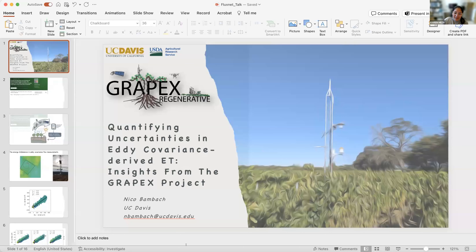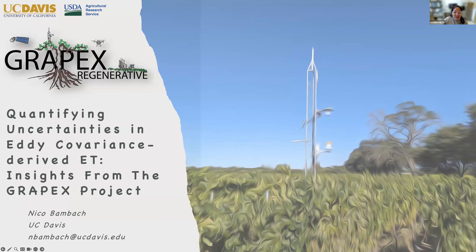Thank you, John, for the great talk. Now let's start with our second speaker, Nico van Batch. He has a PhD in atmospheric science from UC Davis and works as a project scientist in the Department of Viticulture and Enology at UC Davis. Nico's current research focuses on developing novel lower-cost techniques to close the water and energy balance, and advancing boundary layer micrometeorology fundamental theory to quantify evapotranspiration uncertainty.